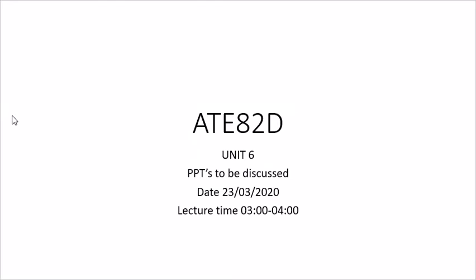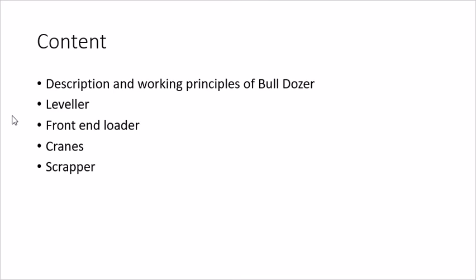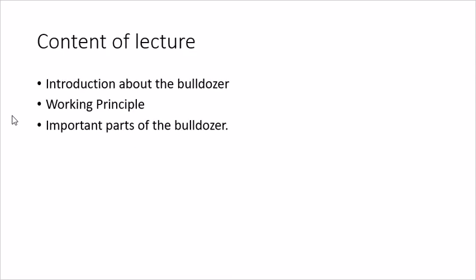Hello friends, this lecture is in continuation with the previous lecture series on tractors and heavy earth moving machinery. In this lecture I will discuss one major thing, which is the bulldozer. This is the start of unit number six, which covers the description and working principle of bulldozer, leveler, front-end loader, cranes, and scrapper. Specifically today we will discuss the introduction, working principle, and important parts of a bulldozer.